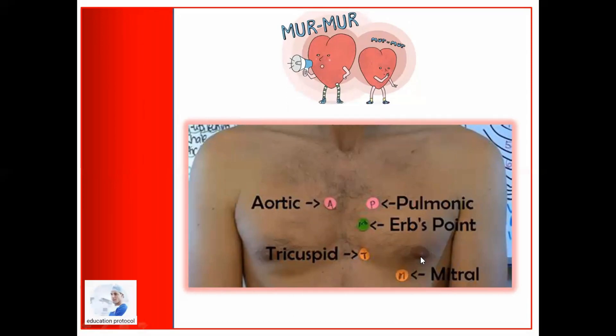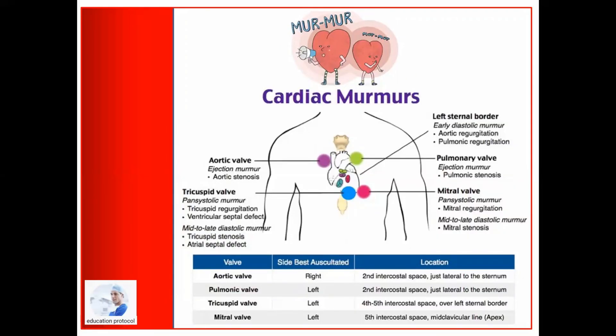Before going for the murmurs, just do a recap of auscultation points in a few seconds: aortic, pulmonary, tricuspid, and mitral are the areas that we need today. The diagram shows the murmurs that you can hear in each cardiac auscultation point, and the specific locations of them are listed in the table — please refer to this again and again.